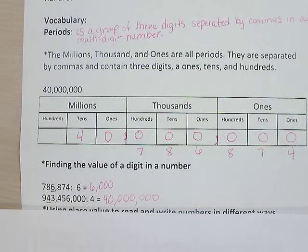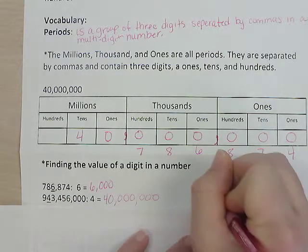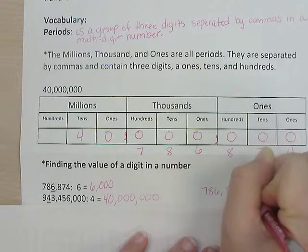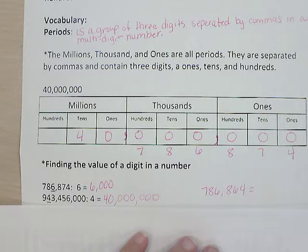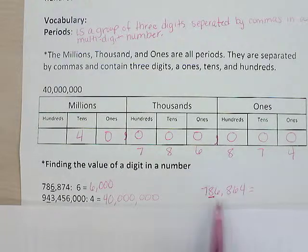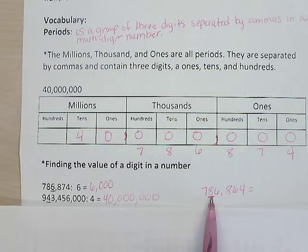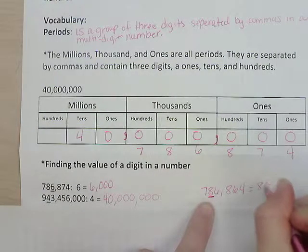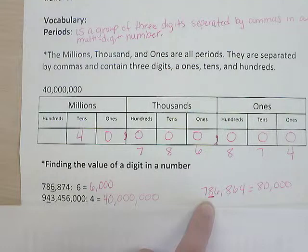Now I'm going to write a number. And after I write the number, I want you to pause the video. I want you to write it on your paper. And I want you to try finding the value of the underlined digit. So the number that I'm going to write is 786,864. And what I would like for you to do is, I would like for you to give me the value of the eight digit. I would like for you to tell me, what is the value of the eight digit in 786,864. So go ahead and pause your video and write the value of the eight digit. Okay. So if you found 80,000 to be the value of the eight digit, you are correct.